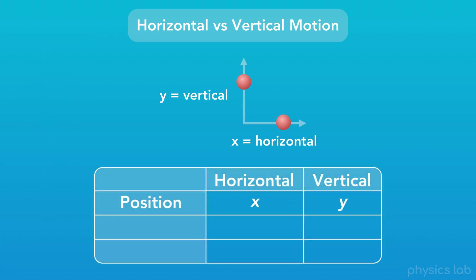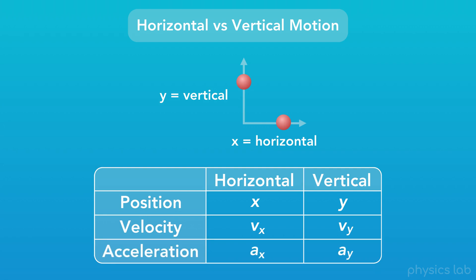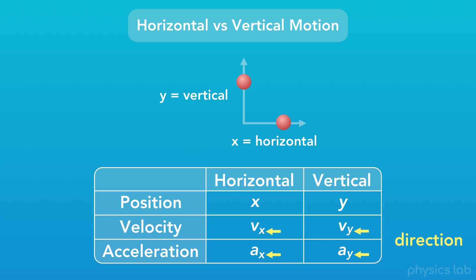Just like we've been using x to represent horizontal position, we're going to use y to represent vertical position, or the height of an object. And sometimes we'll use x and y as subscripts to label the direction of something. We can use v with x as a subscript to mean velocity in the horizontal direction, or v with y as a subscript to mean velocity in the vertical direction. Likewise, ax would mean horizontal acceleration, and ay would mean vertical acceleration. When x and y are the actual variables, they mean horizontal and vertical position. But when they're subscripts next to a variable, x and y are telling us the direction of that variable, like velocity or acceleration.